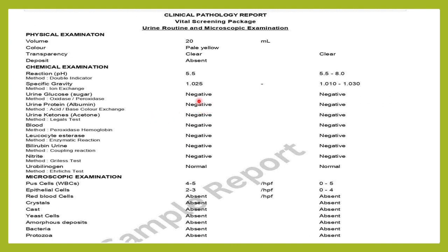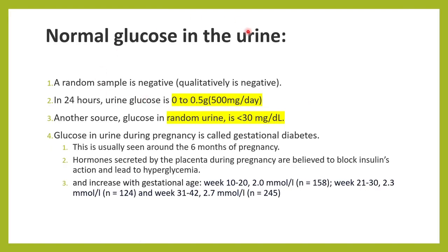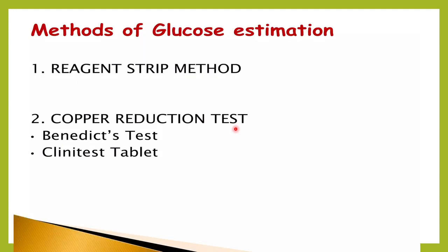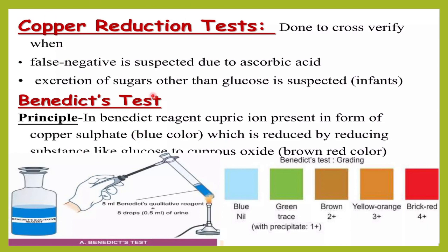In a normal urine routine and microscopy report we usually do not see any glucose in the patient. Urine glucose, also called urine sugar, is measured by the oxidase-peroxidase method. The normal excretion of glucose is less than 500 mg or 0.5 gram per day, and in a random urine sample it will be less than 30 mg per deciliter. Two common tests are the reagent strip method and the Benedict's test.